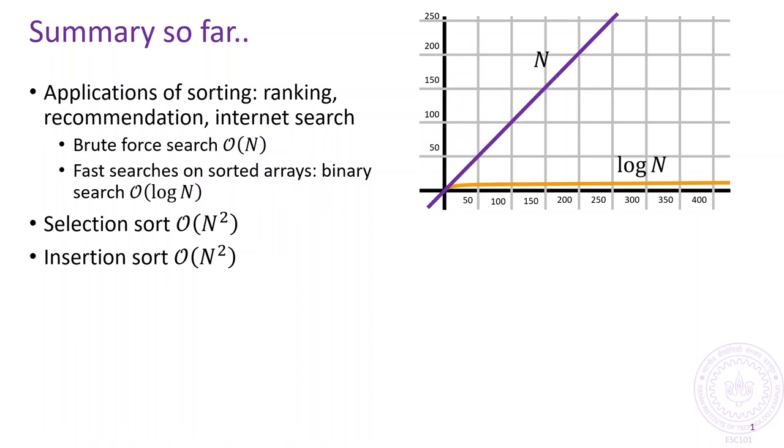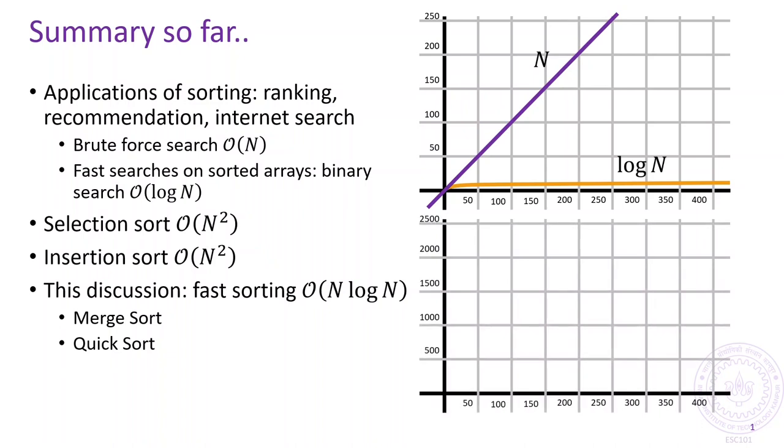Today, we will start looking at fast algorithms for sorting, namely merge sort and quick sort, which take only order n log n time to sort an array with n elements. These algorithms can be much faster than the order n squared algorithms such as selection sort or insertion sort, especially for large arrays.